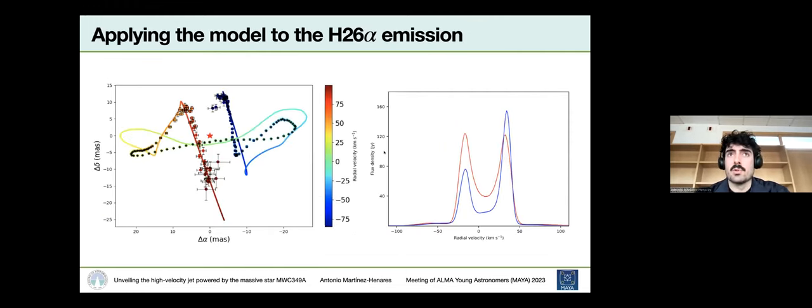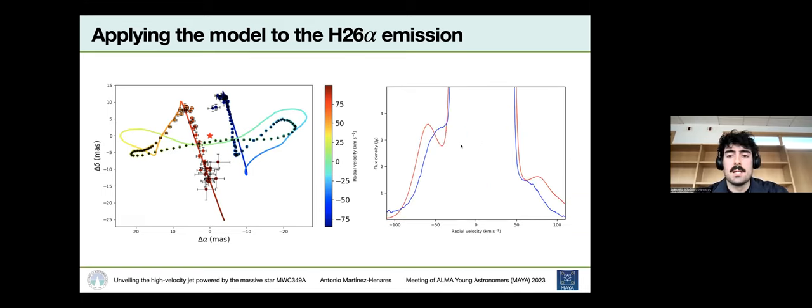As I told you before, we have obtained two lines, H30 alpha and H26 alpha. I showed you before the H30 alpha model. We applied this exact same model to the H26 alpha, and we see that it's double-checked in the sense that it also works for the H26 alpha emission. Only thing here is that we have addressed the saturation of the maser, which is important for this line. Not for H30 alpha, but it is important for this one.